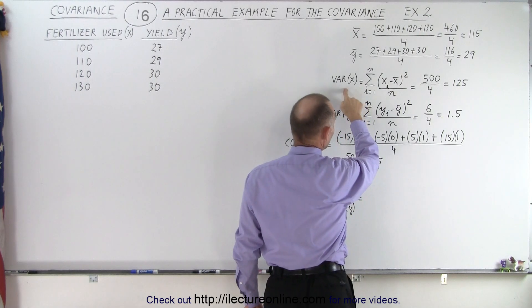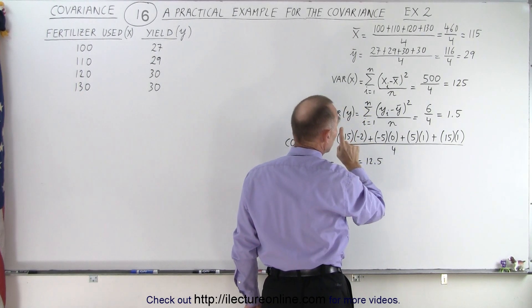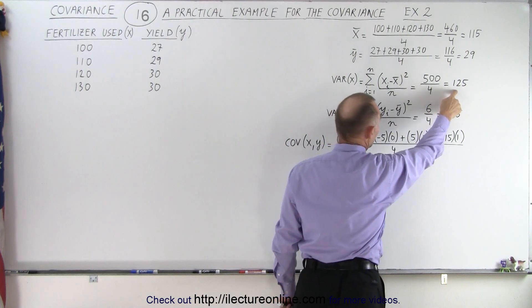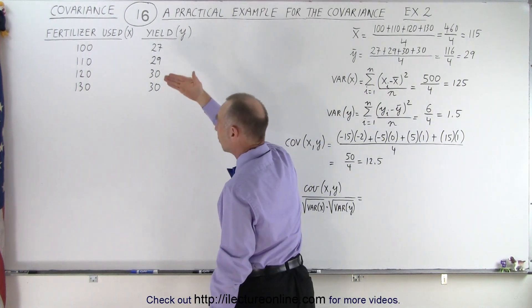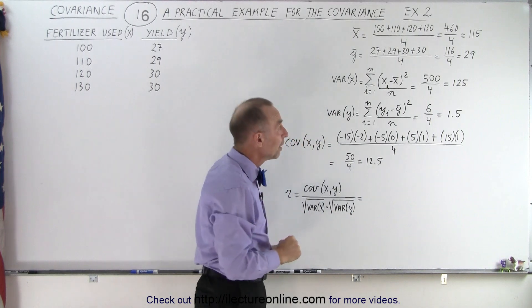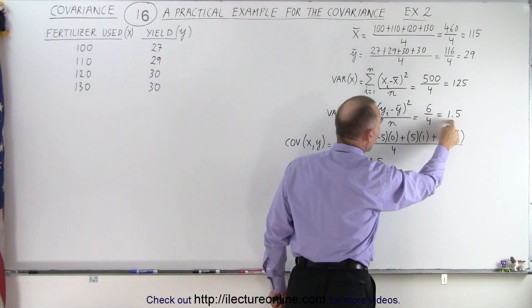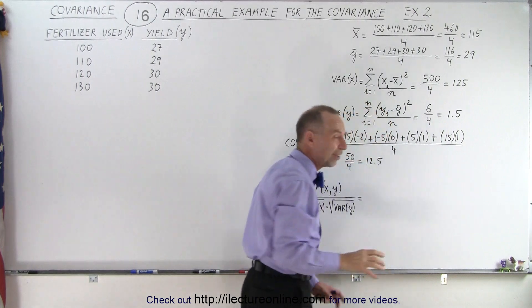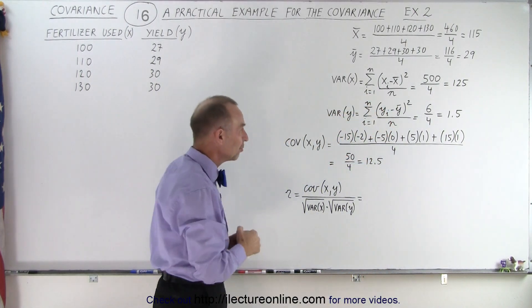Then notice we calculated the variance in X and the variance in Y. The variance in X is still very large because we're using consecutively more and more fertilizer, quite a bit more each time. But the variance in Y is very small compared to the variance in X. Does that have a meaning? Well, we'll see in just a moment.